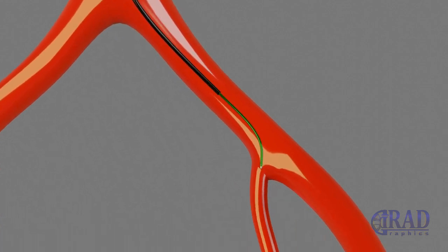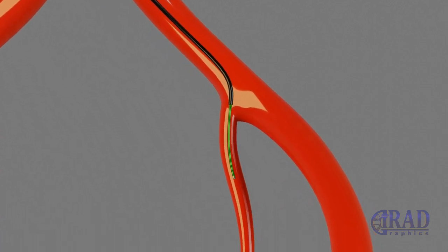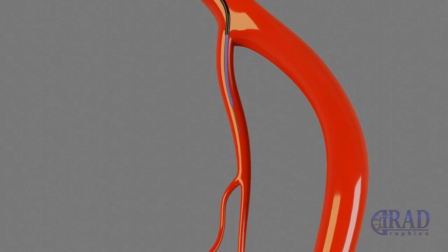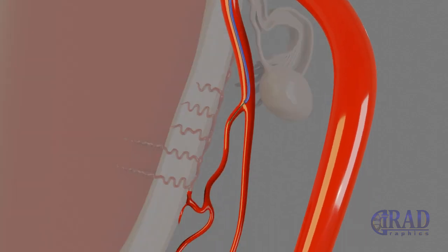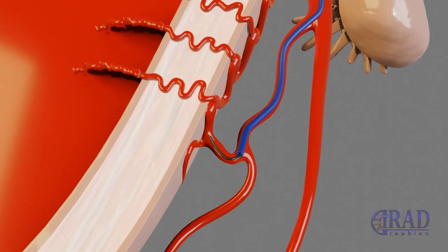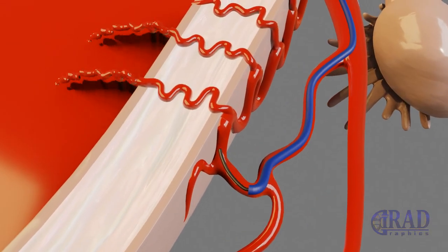Then, the wire is exchanged for a combination of microcatheter and microwire, which are advanced together to the uterine artery.